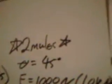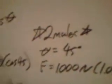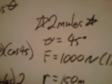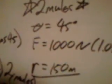two mules, so we have to find the total work done by both mules and we'll have to double the final answer. We know that theta is 45 degrees, and we know that the force is a thousand newtons, or 1.0 kilonewtons. We know the distance